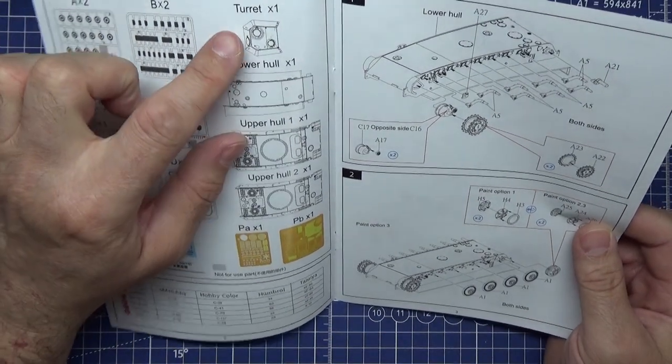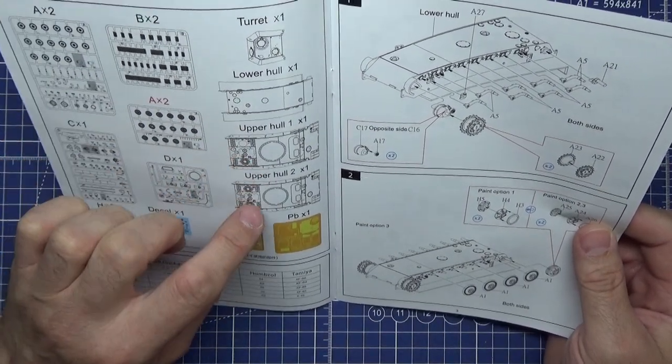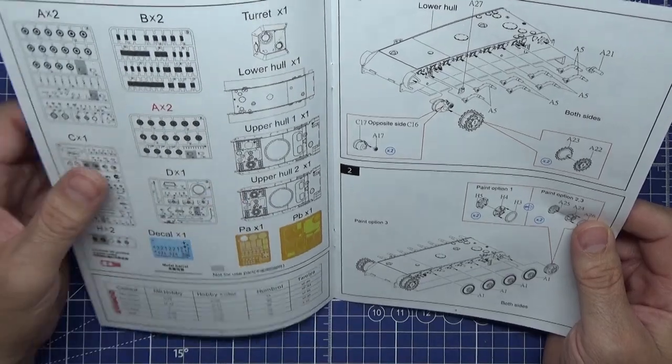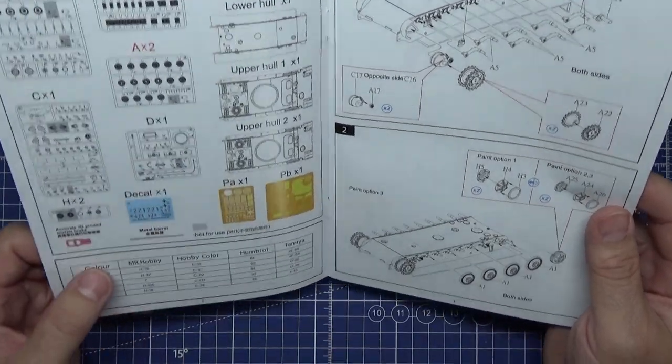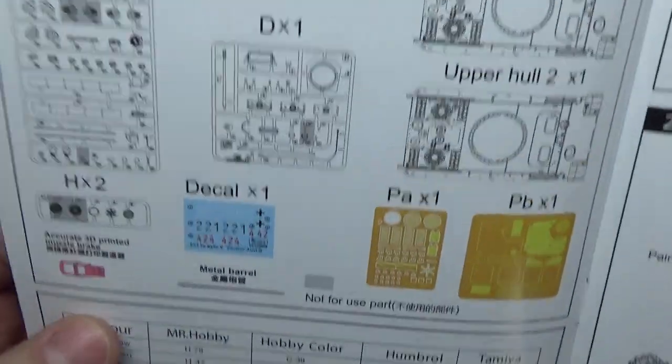There's the turret, lower hull one, upper hull one, upper hull two, and colors at the bottom which I'll bring a bit closer so you can see.